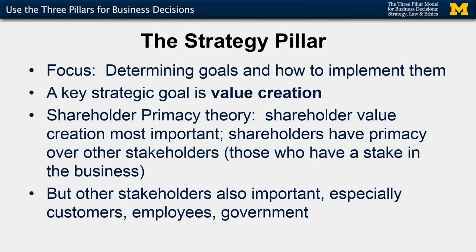So these are the three pillars of decision making, with the revision that economics has been changed to strategy. The focus of strategy on a very general level is to determine your goals and how to implement them. One of the key strategic goals that corporate strategists emphasize is value creation. In the US and some other economies, there's something called the shareholder primacy theory, which basically means that shareholder value creation is the most important — you want to create value for your shareholders, and they have primacy over other stakeholders.